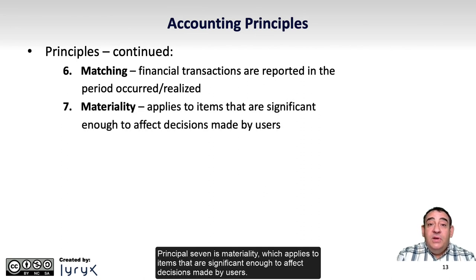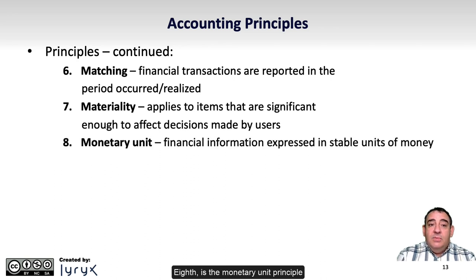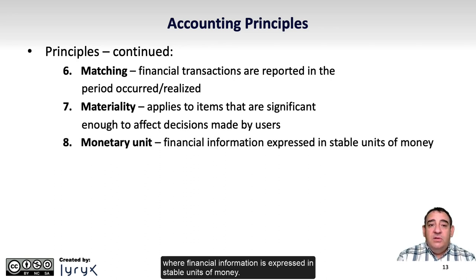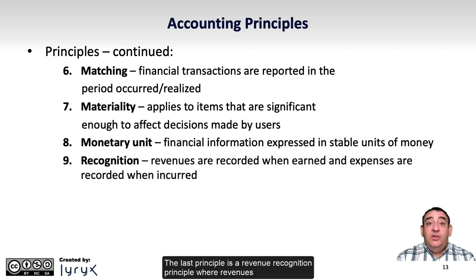Principle seven is Materiality, which applies to items that are significant enough to affect decisions made by users. Eighth is the Monetary Unit Principle, where financial information is expressed in stable units of money. This means it would not be appropriate to report financial statements in Bitcoin or other unstable cryptocurrencies. The last principle is the Revenue Recognition Principle, where revenues are recorded when earned and expenses are recorded when incurred.